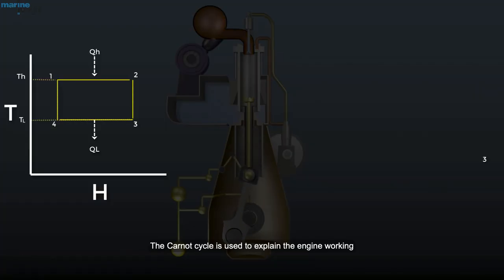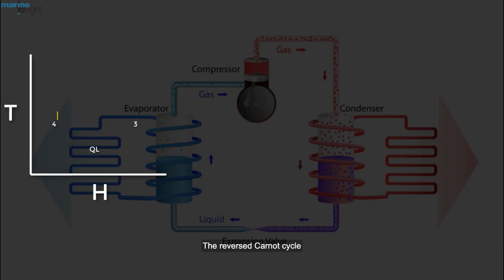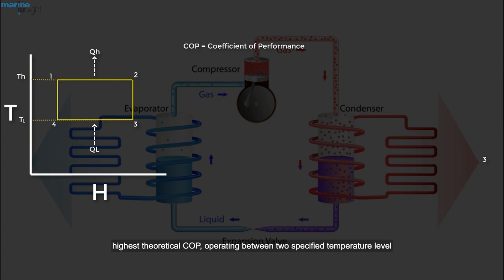The Carnot cycle is used to explain the engine working. The reverse Carnot cycle can be used to achieve efficient refrigeration cycle with the highest theoretical COP, operating between two specified temperature levels.